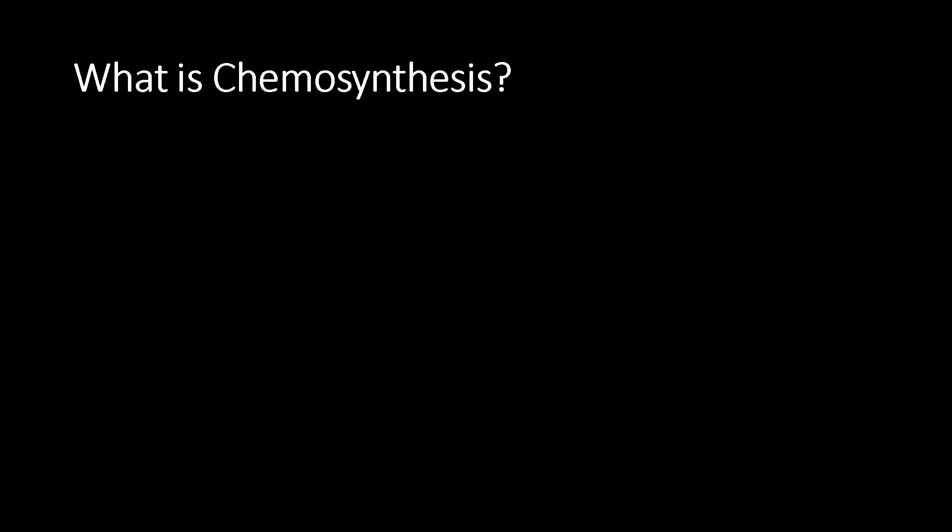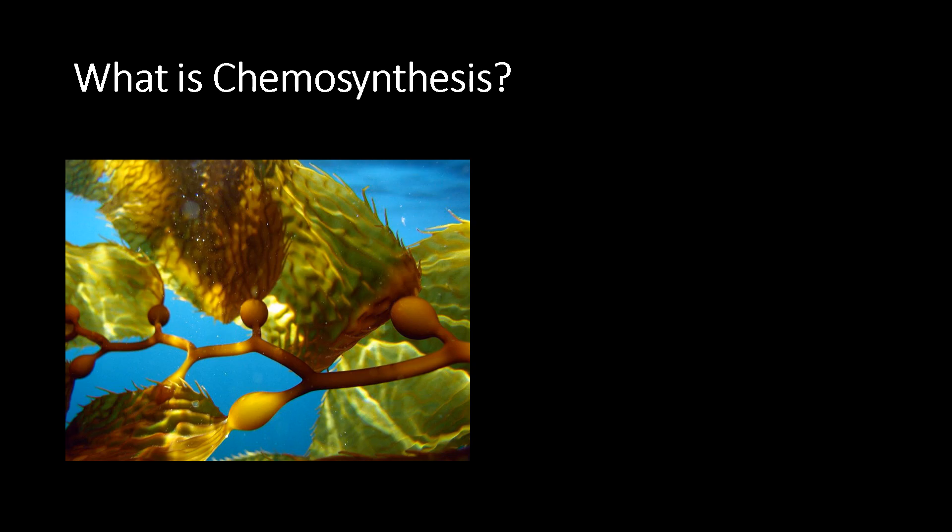Do you know what is chemosynthesis? Green plants, called autotrophs, prepare their own food with the help of sunlight, water, and chlorophyll. As they utilize sunlight, this process is called photosynthesis. But there are few autotrophs that do not use sunlight because sunlight is not available to them — for example, plants inside the deep ocean. They synthesize their own food with the help of chemical energy released during chemical reactions. These are called chemosynthetic plants; instead of light energy, they utilize the energy released during chemical reactions.